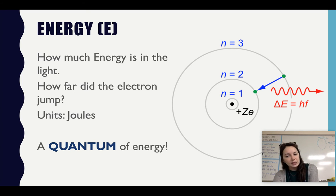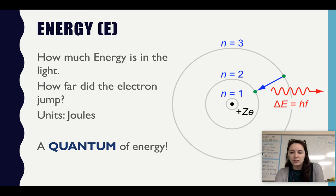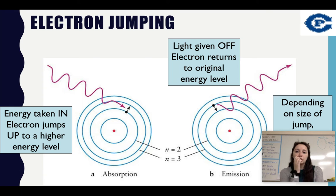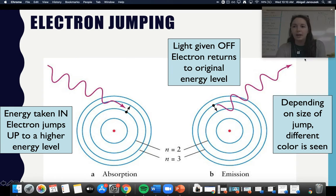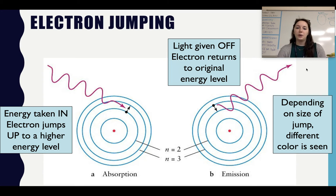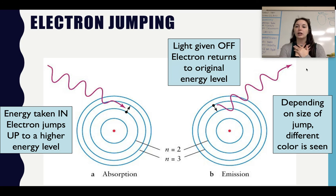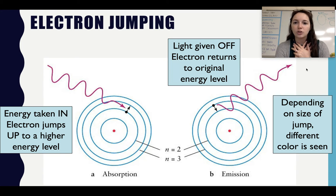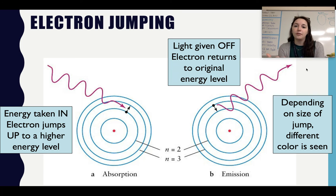Energy is always associated with E — it's like how much energy is in the light, or how far the electron jumped. The unit for energy is always joules, and it's always a quantum of energy — an amount, not just one. We have absorption and emission. Absorption is when energy comes in, causing the electron to jump up to a higher level. Once at that level, the electron can't maintain all that energy and needs to return to its ground state, so it emits that energy in the form of light and jumps back down. Light is always given off as energy is emitted when the electron returns to its ground state.